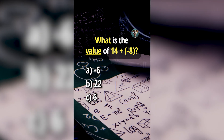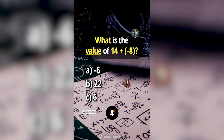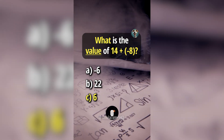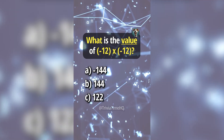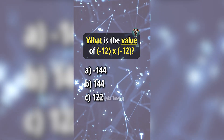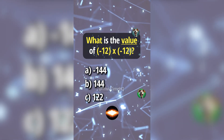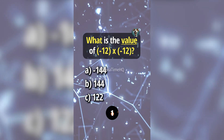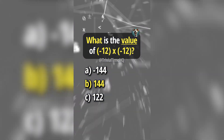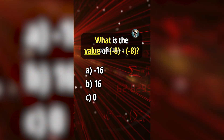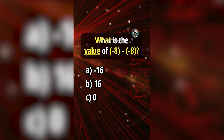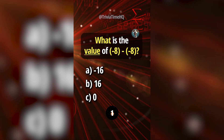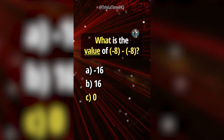What is the value of 14 plus negative 8? Answer C, 6. What is the value of negative 12 times negative 12? Answer B, 144. What is the value of negative 8 minus negative 8? Answer C, 0.